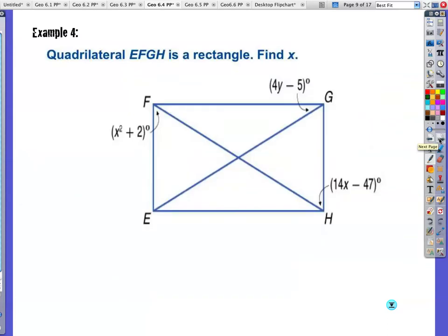Example 4. Look, we got an x squared in there. Quadrilateral EFGH is a rectangle. Find the value of x. So I'm looking at this angle right here and this angle right here, which happen to be alternate interior angles, which means they're going to be congruent. So x squared plus 2 is equal to 14x minus 47. You're like, how do I solve an x squared and an x? Here's what you're going to do. We're going to set it equal to 0. So I'm going to subtract 14x and add 47 to both sides.